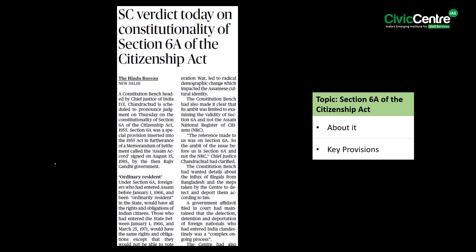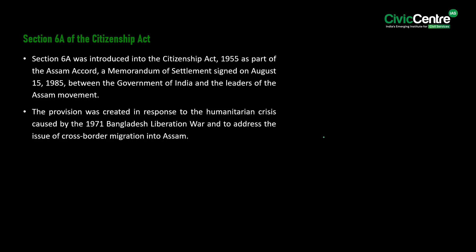The third article says that a Constitution Bench headed by the Chief Justice is scheduled to pronounce judgment on the constitutionality of Section 6A of the Citizenship Act of 1955. Section 6A was introduced into the Citizenship Act as part of the Assam Accord — a memorandum of settlement signed on August 15, 1985 between the Government of India and the leaders of the Assam movement — in response to the humanitarian crisis caused by the 1971 Bangladesh Liberation War and cross-border migration into Assam.